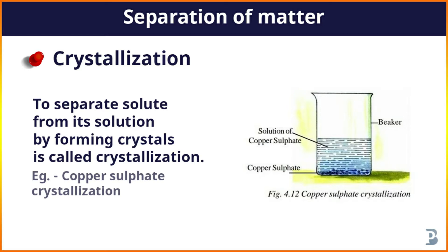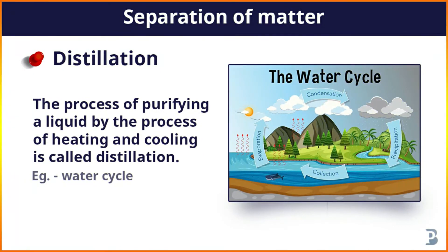After this, filter the solution with filter paper to remove impurities and let it cool slowly. After some time you will see crystals of copper sulfate are formed. In this way we can separate copper sulfate in the form of crystals. This process is called crystallization.